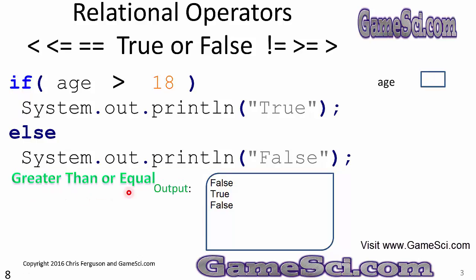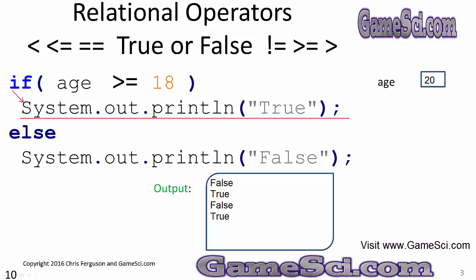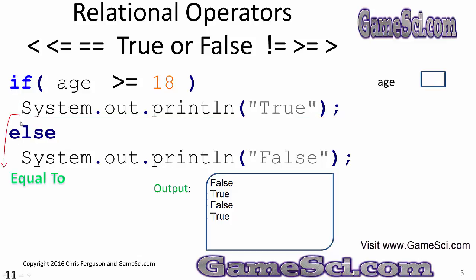Let's look at the greater than or equal to operator. We'll put 20 in the age variable. We're looking at 20 greater than or equal to 18, which is very much a true statement. As a true statement, we'll select the true path and output the word true — it shows up on the output. When it's done executing the if portion, it will skip past the else. It will never execute both: it will select the if and skip the else, or select the else and skip the if.